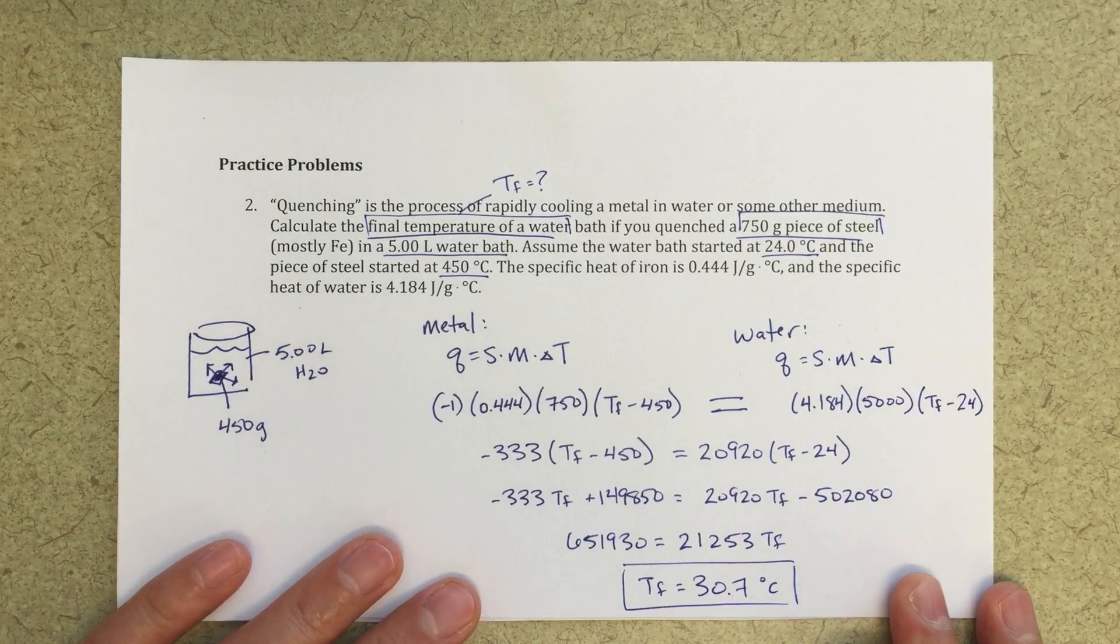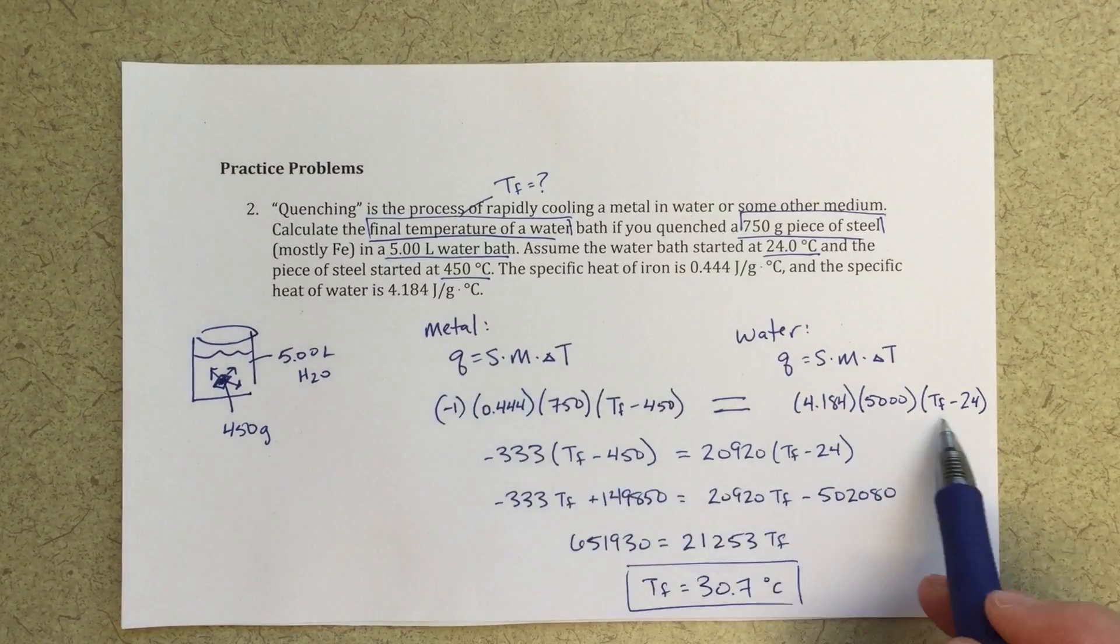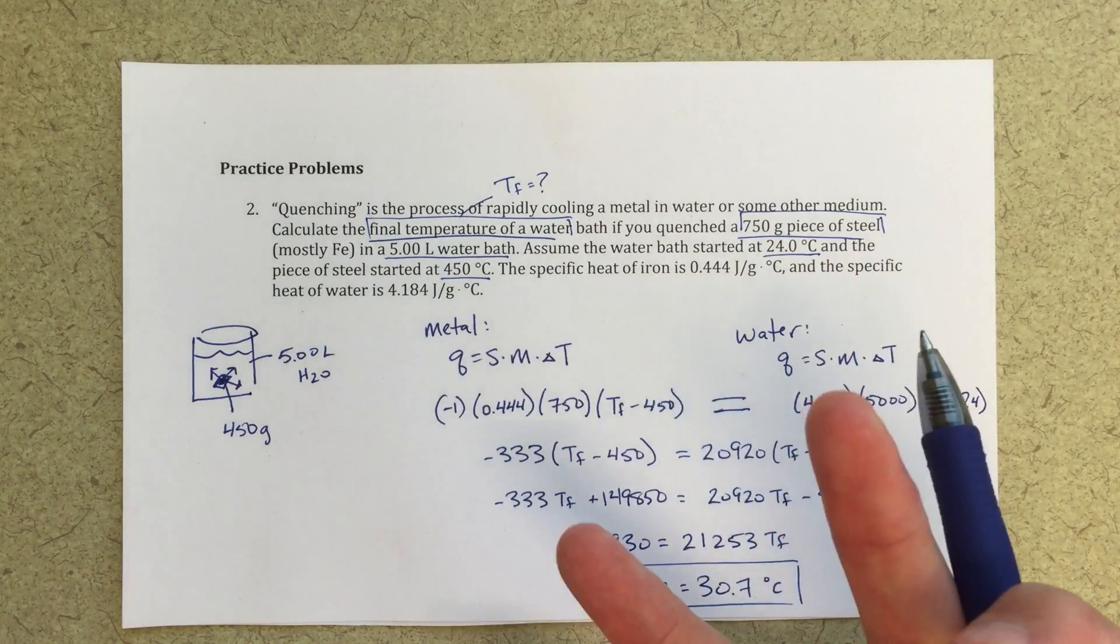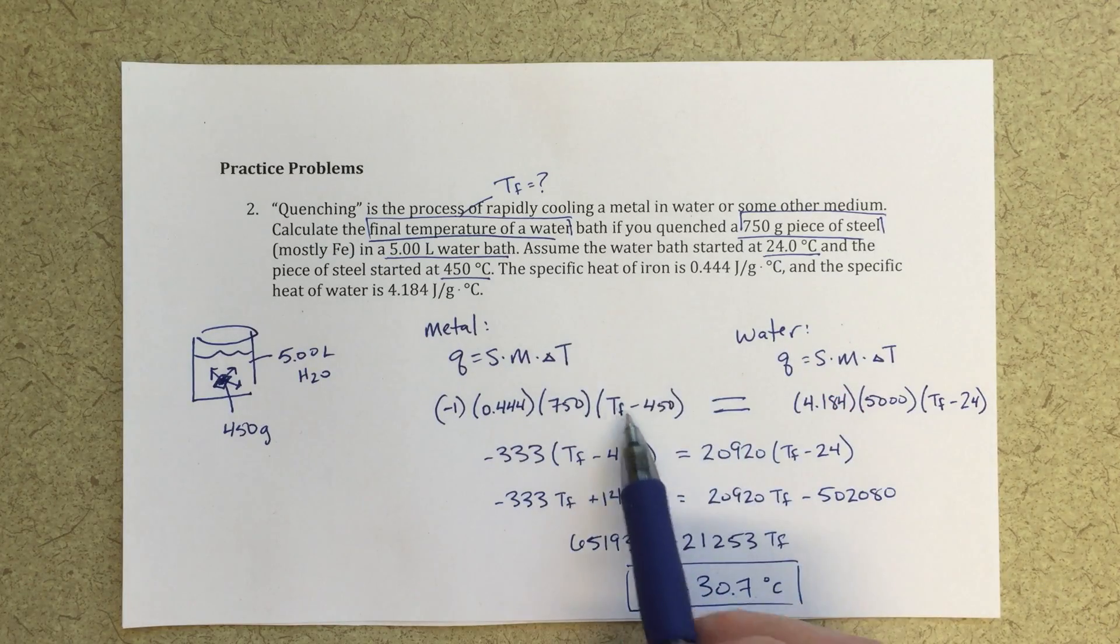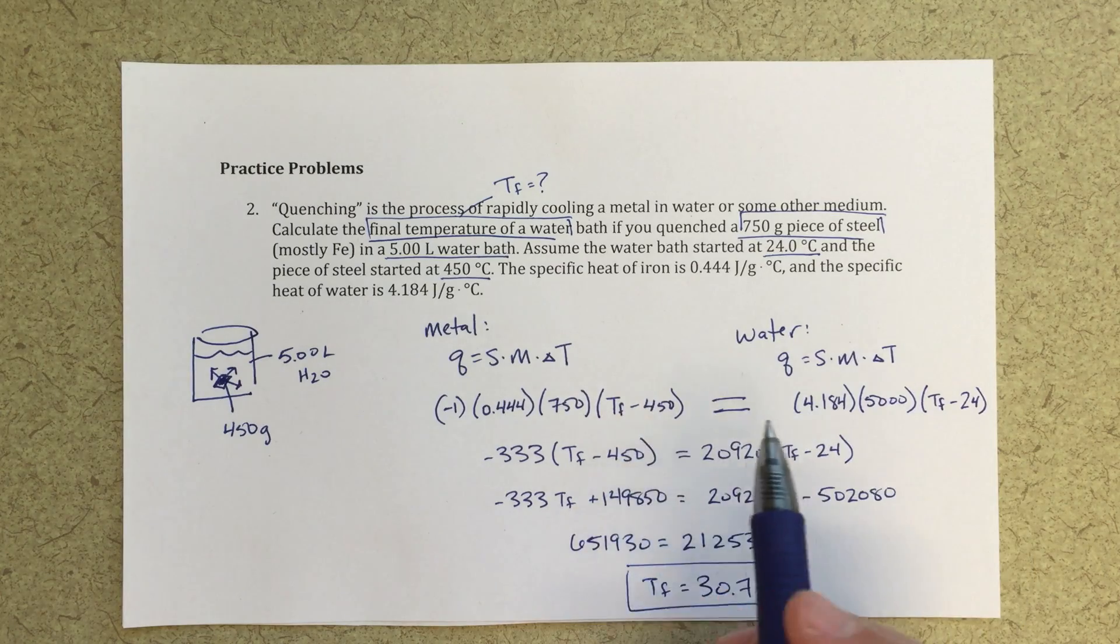So this problem is a really great problem in terms of thinking about energy transfer. The real key here is thinking about, from the point of view of the metal, how much energy is going to be transferred. And that is all a calculation based off of that t final, that delta t. How much is the temperature going to change? How much metal do we have? And what's the specific heat of that metal?